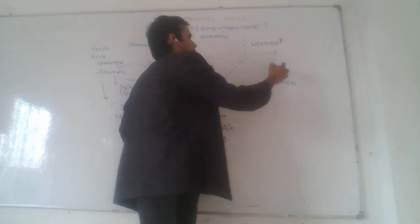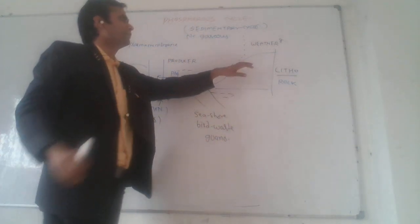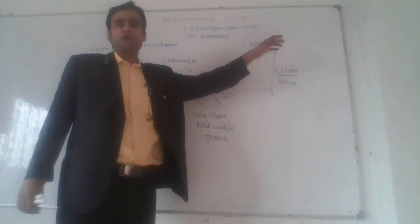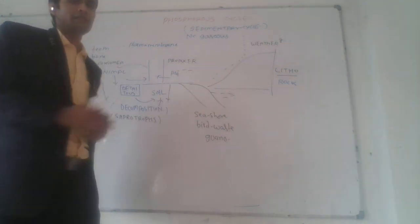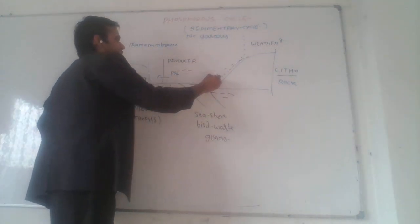Lithosphere or rocks - lithosphere is here on the surface of mountains, plains, and plateaus. After weathering during rainfall, some amount of phosphorus is dissolved in water and comes into the soil.